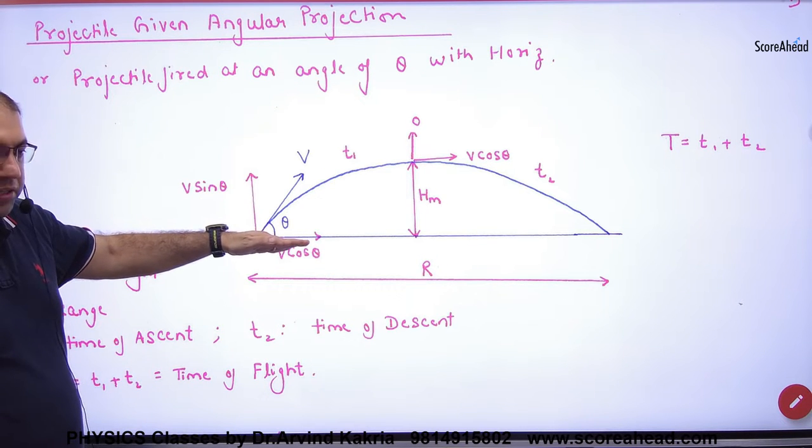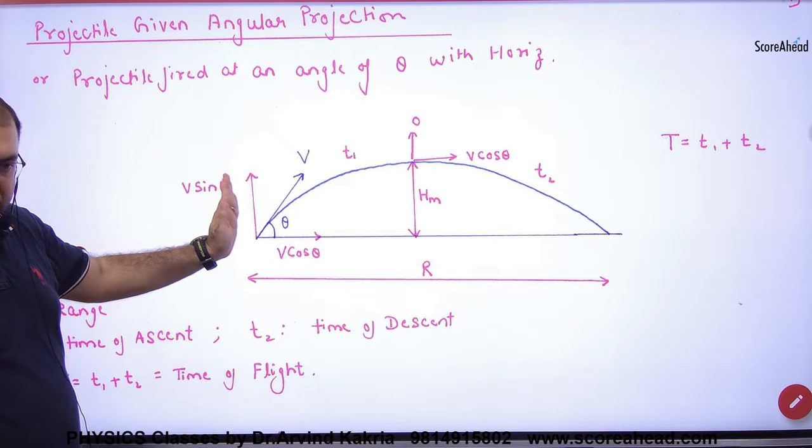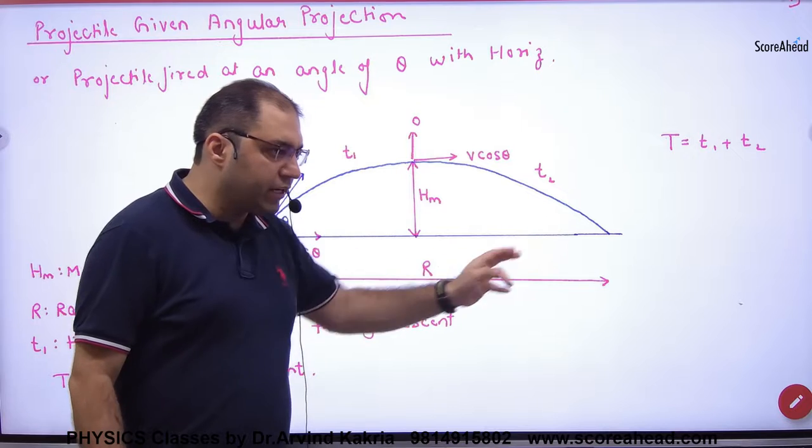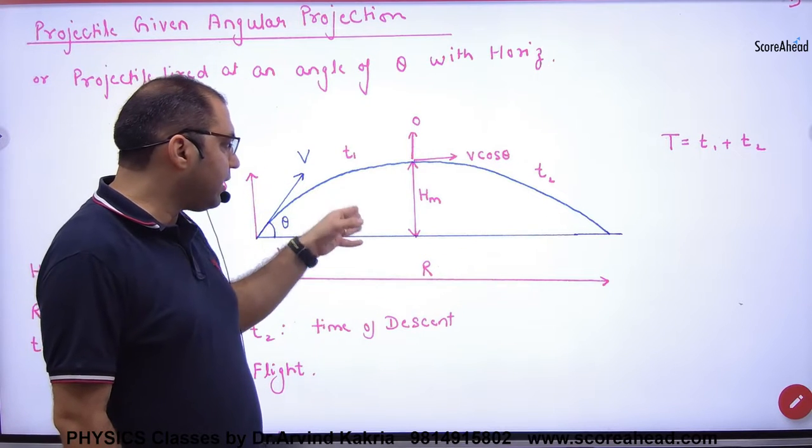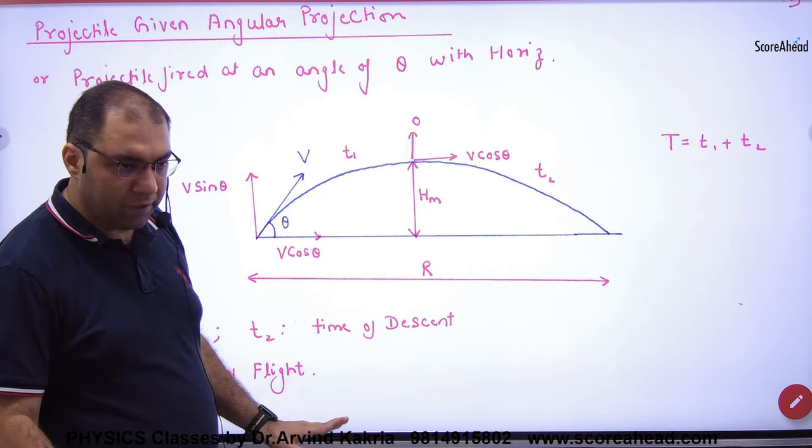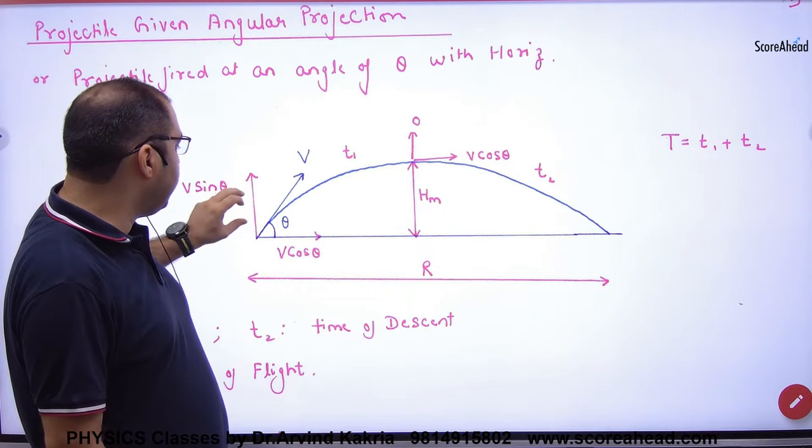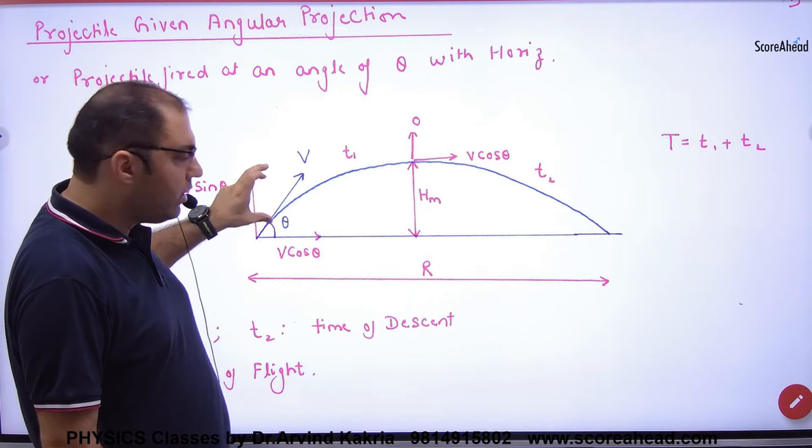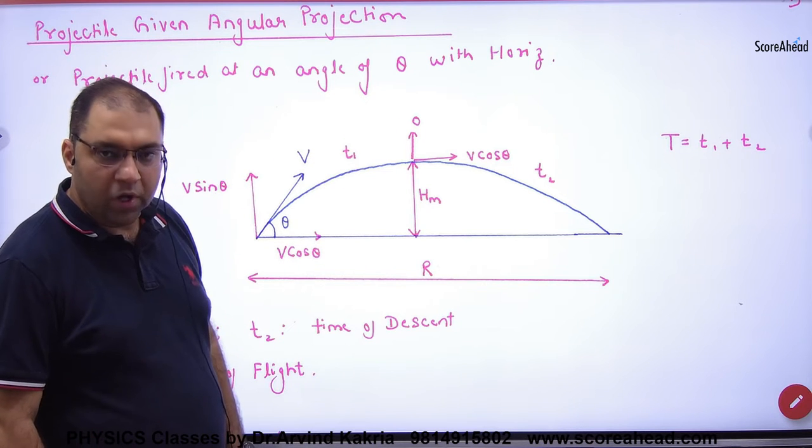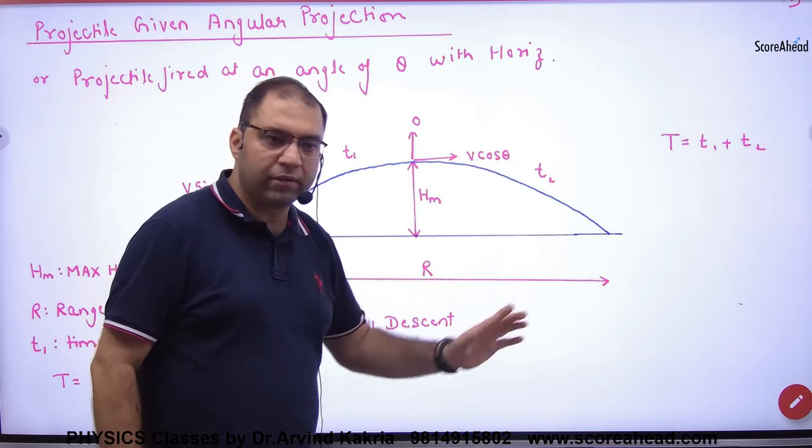Horizontal velocity v cos theta, vertical velocity v sin theta. So the projectile covered the height which is maximum height. The velocity here is v sin theta, then the velocity is less and less. What will happen? Zero. And in horizontal velocity always remains the same.